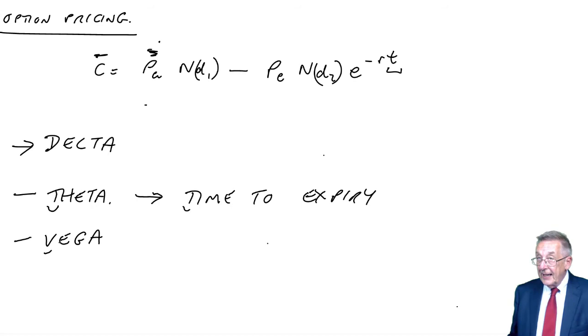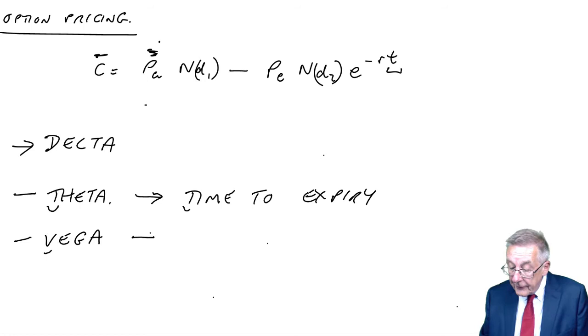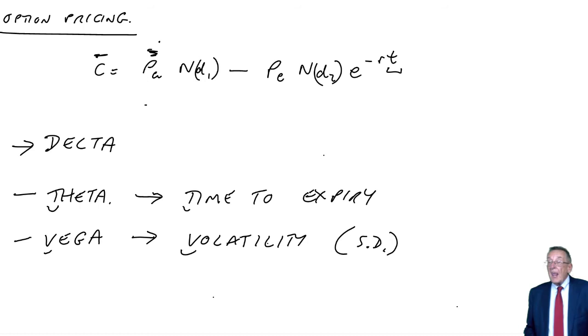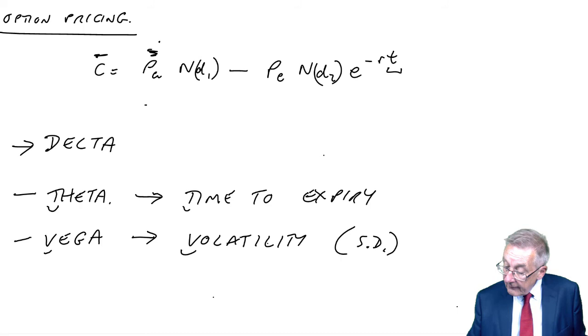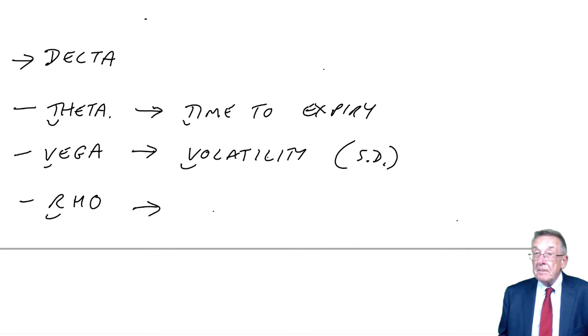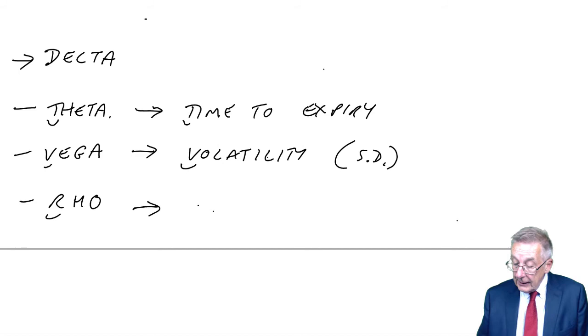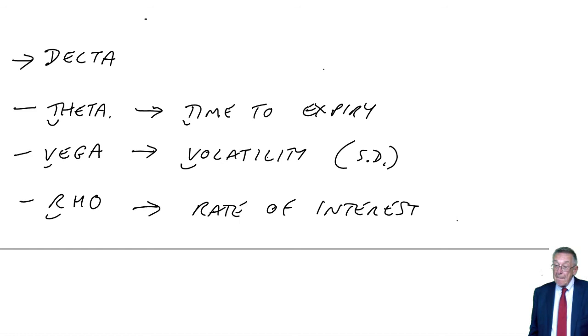You can't be expected to do any numbers. There is a formula, it's not in the syllabus. But remember the words - theta measures the effect of changes in the time. Vega begins with V. Another factor in the D1, D2 formulae which affects the option price is the standard deviation or the volatility. Another factor that affects the option price, the premium. Rho, where you can probably guess, it begins with R. Another factor in the formulae is the risk-free rate of interest. As R changes, so does the option premium. Those three are easy enough to remember: theta, time; vega, volatility; rho, rate of interest.